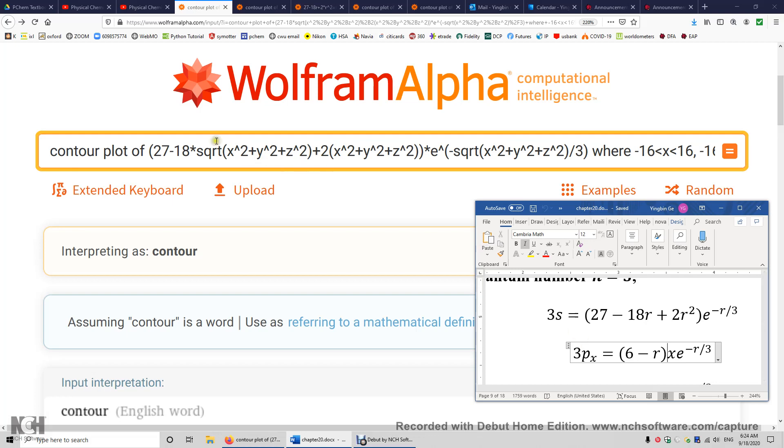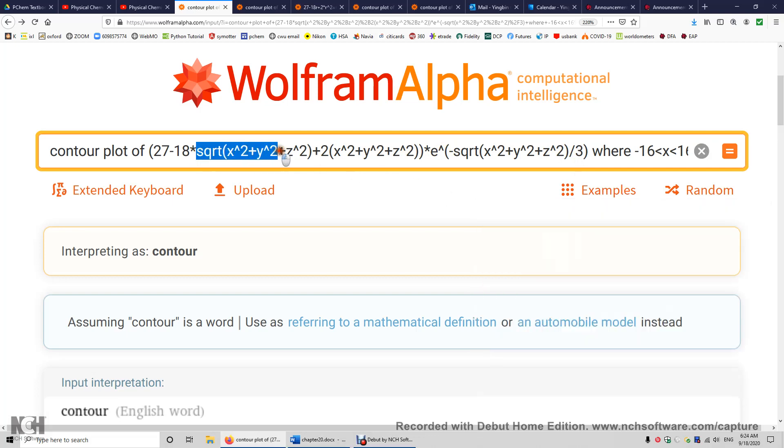So over here, I just typed up contour plot of 27 minus 18 times r plus 2r squared times e to the power of negative r over 3. Alright, just like this. Except that r is replaced with its mathematical expression.